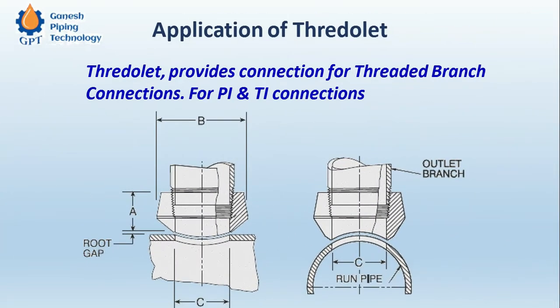ThreadOlet provides connection for threaded branches like pressure indicators and temperature indicators. The header side of the ThreadOlet is butt welded — full penetration butt welding is done on that side — and on the branch side we have an external male threading. The internal threading is provided by the ThreadOlet.